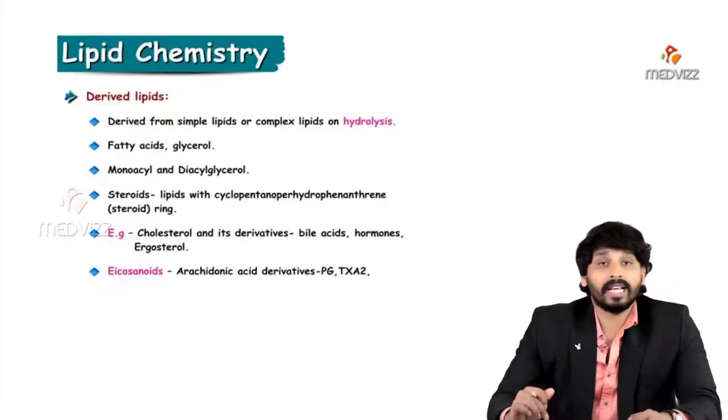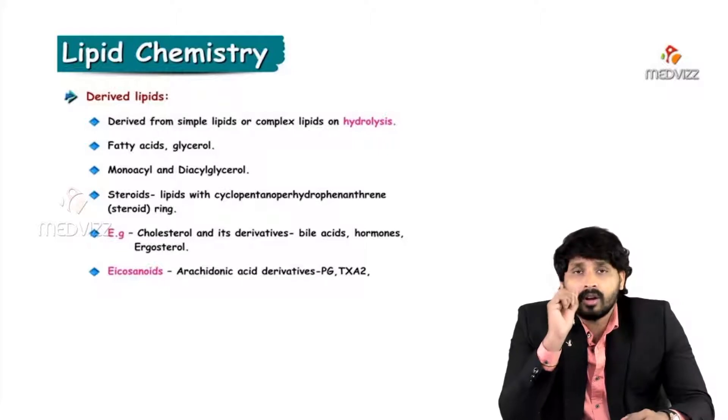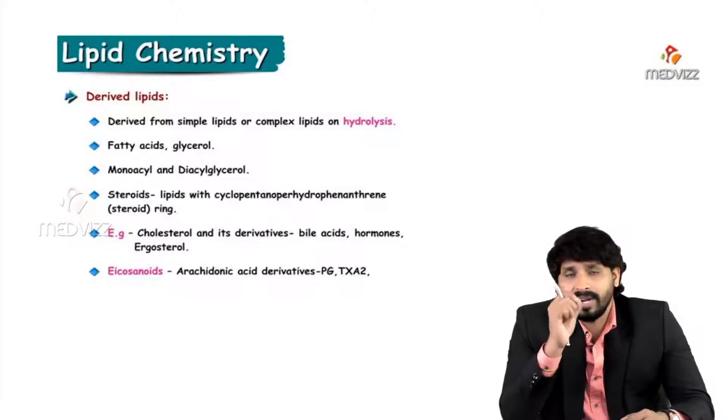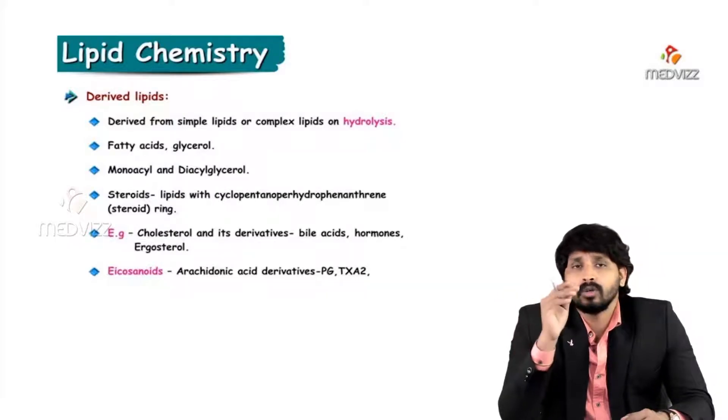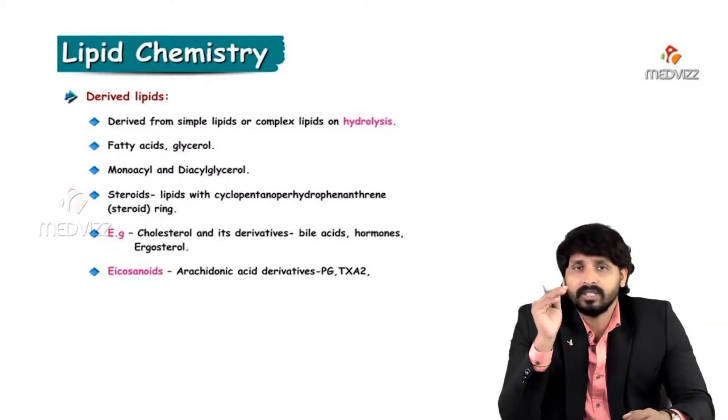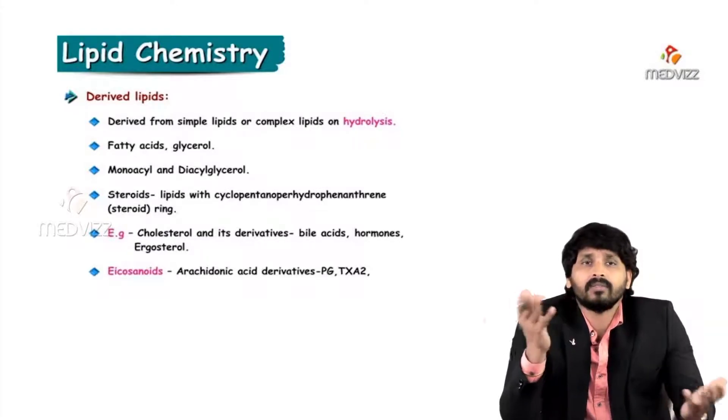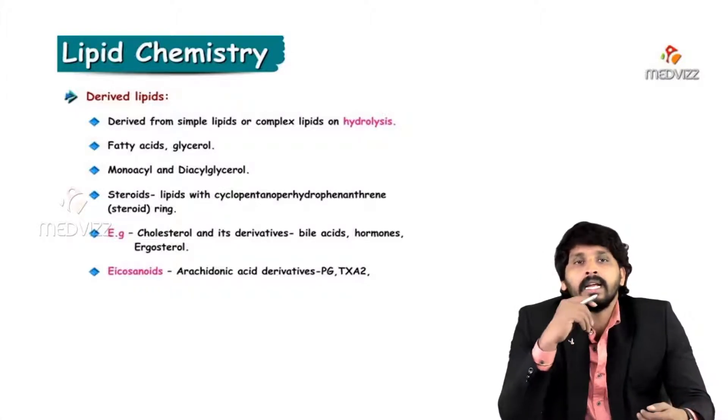So third one is derived lipids. When complex lipids or simple lipids undergo hydrolysis - when I break this ester linkage - here fatty acids are in ester linkage with the alcohols, right? So when I hydrolyze these simple and complex lipids, hydrolysis is nothing but breaking of ester linkage. So I will get fatty acids and glycerol. So these two comes under category derived lipids.